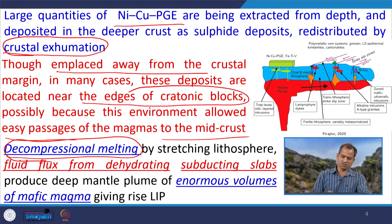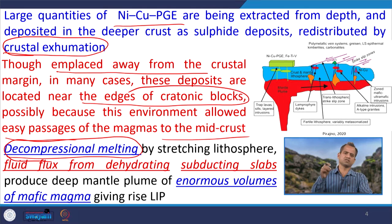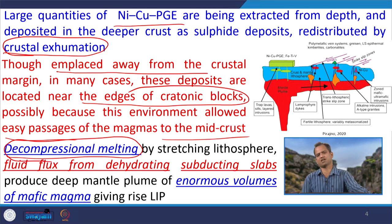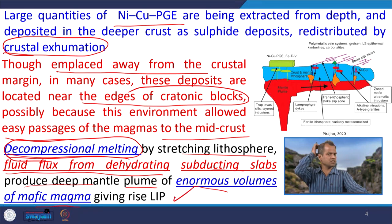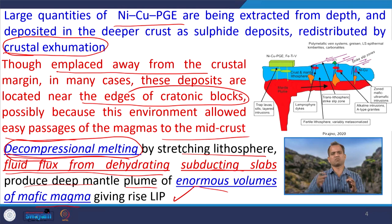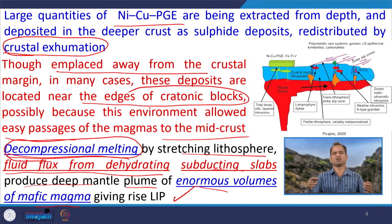Those weak zones allow magma to emplace itself near to the surface. During this decompressional melting, there are different types of melting processes involved. There are three types: decompressional melting responsible for stretching, increase of temperature, and induction of volatiles due to subducting of the slab. Here we are talking about decompressional melting by stretching the lithosphere and fluid flux from dehydration of the subducting slab, which produces mantle plume and enormous volume of mafic magma giving rise to LIP — irrespective of which region is responsible for the magma generation.